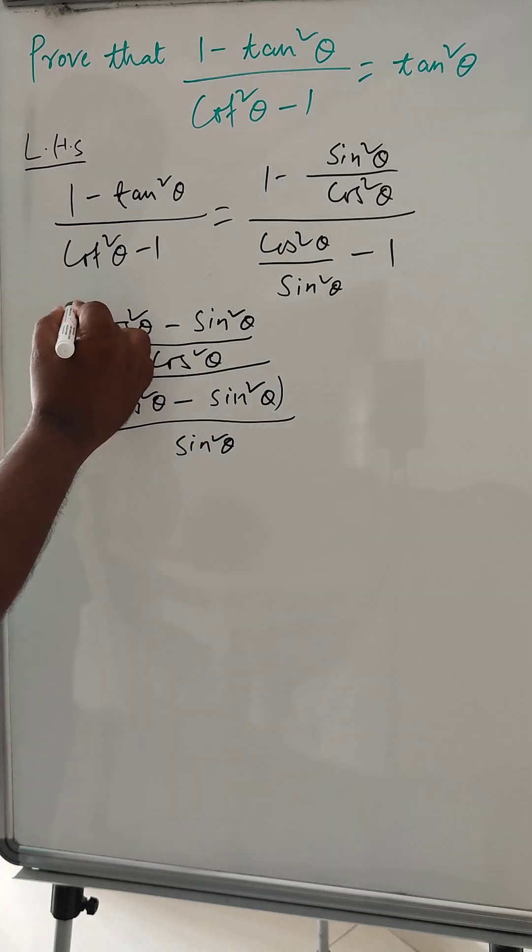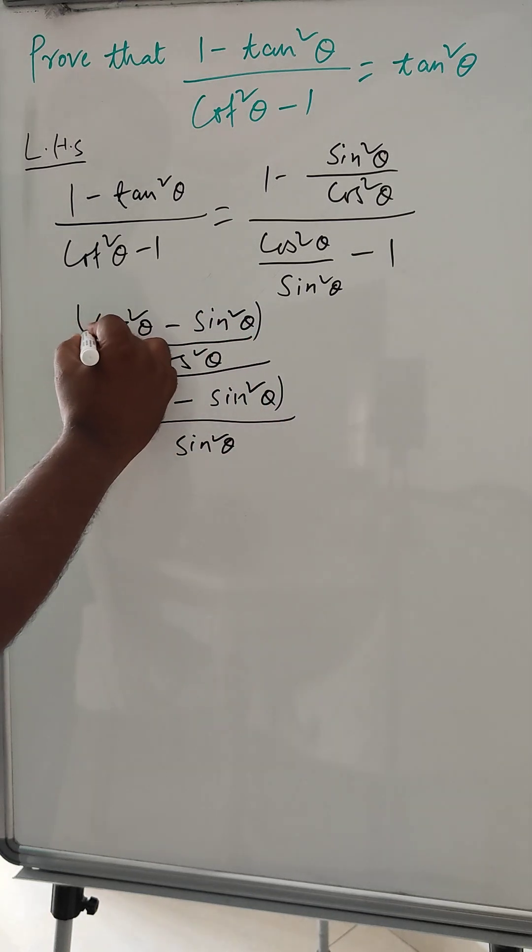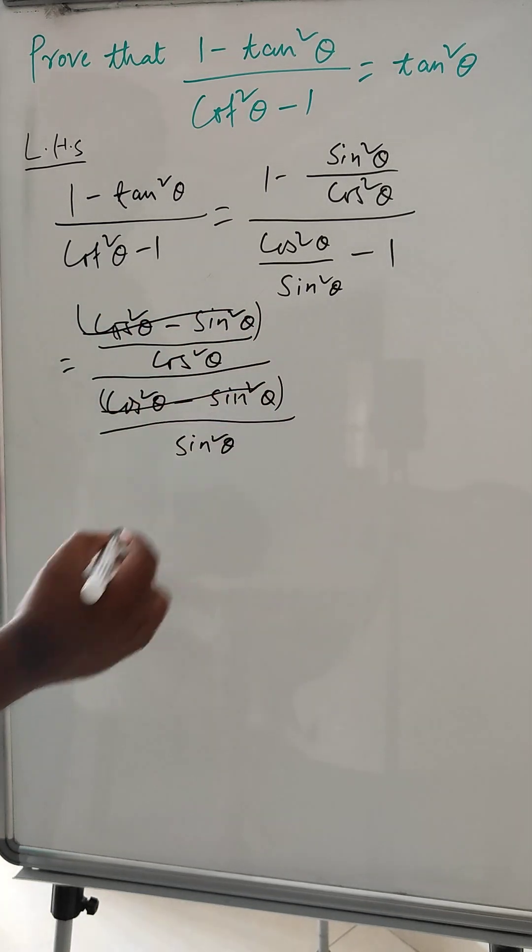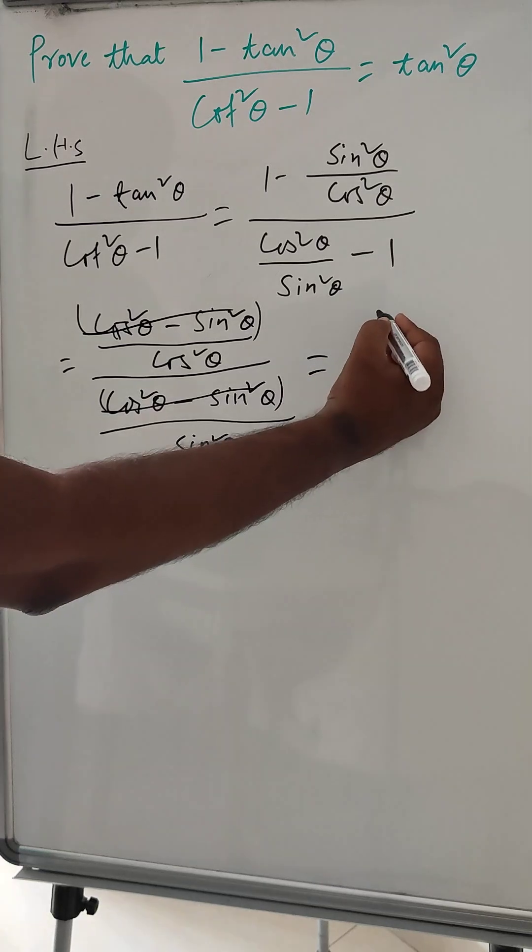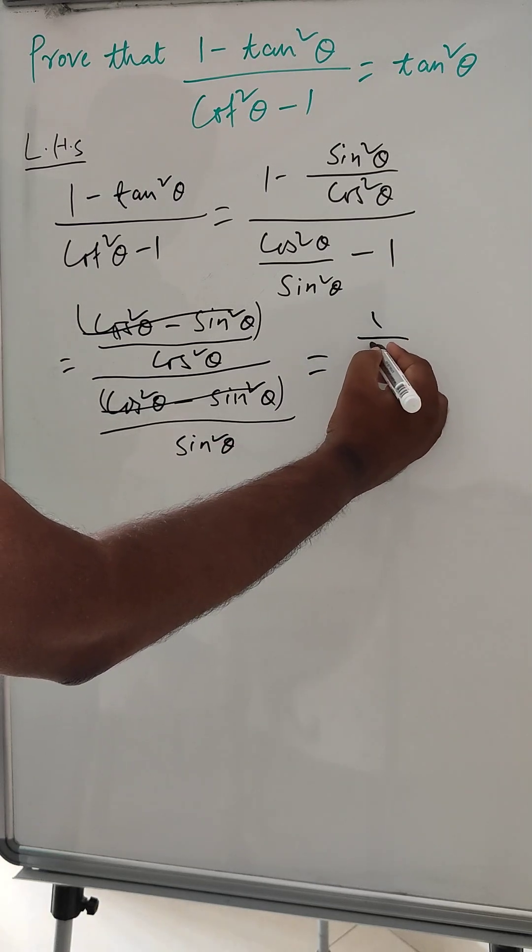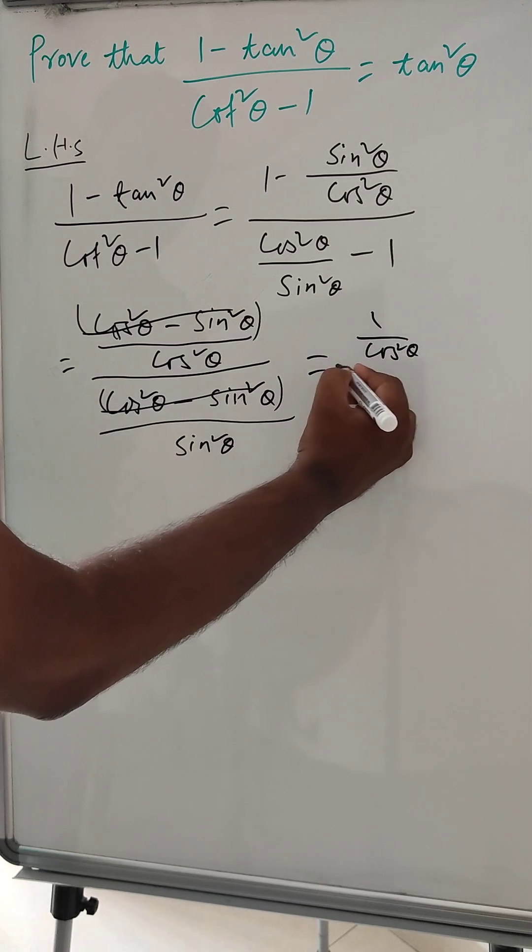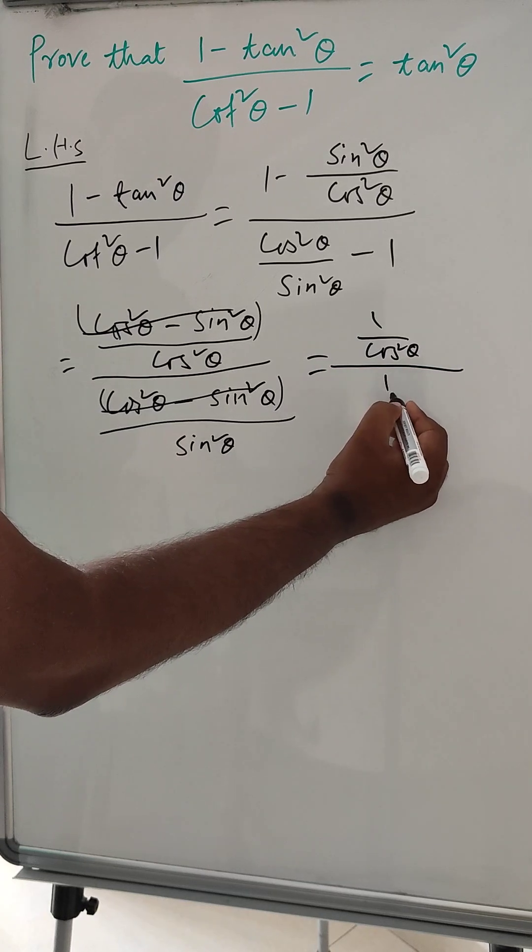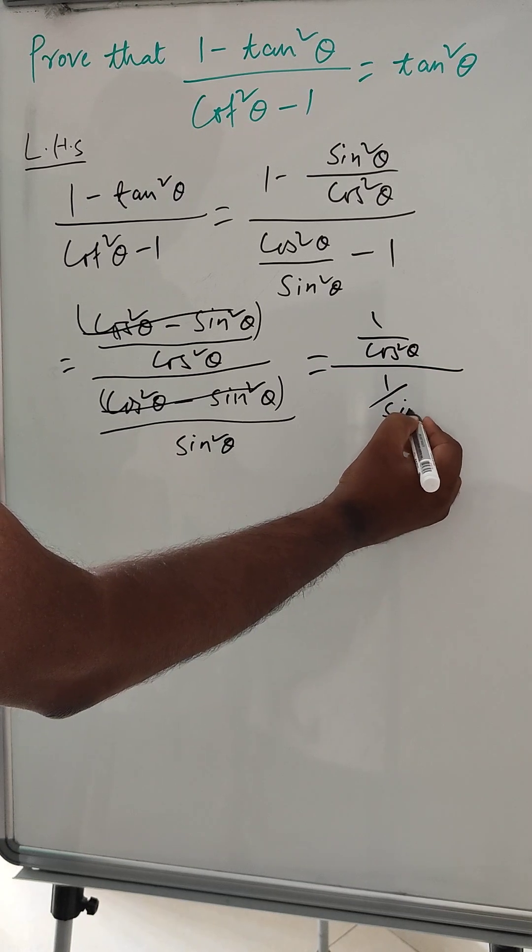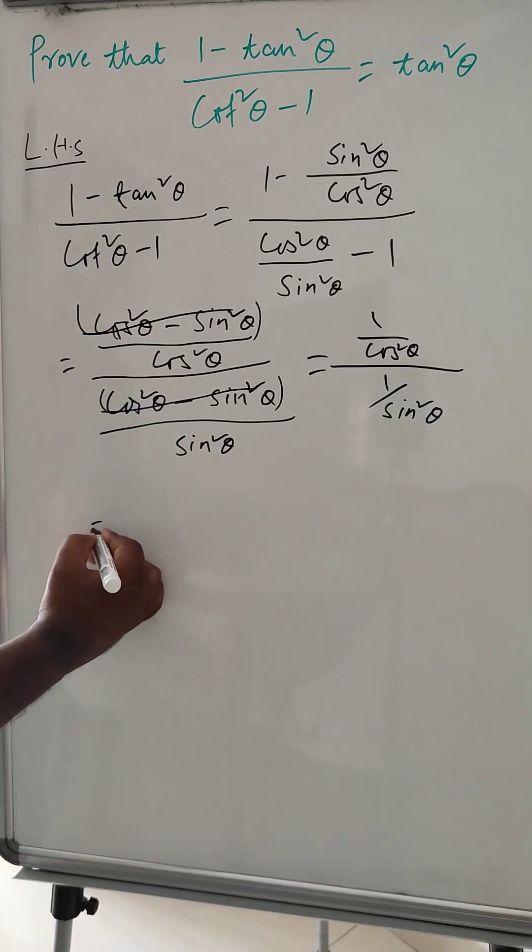So these terms can get cancelled. So it can be 1 over cos square theta divided by 1 over sin square theta.